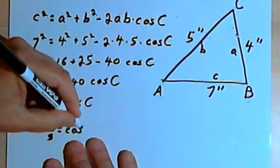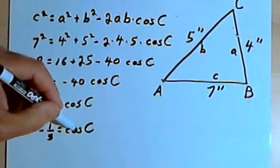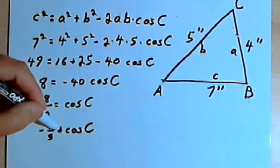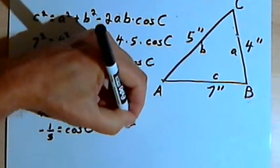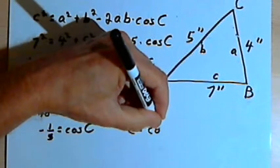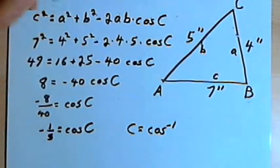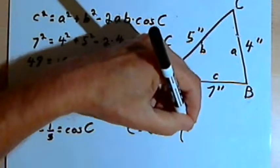So that's the cosine of c. Basically, I want to find c. If I know what the cosine of c equals, I can say that c equals the inverse cosine of that negative 1 fifth.